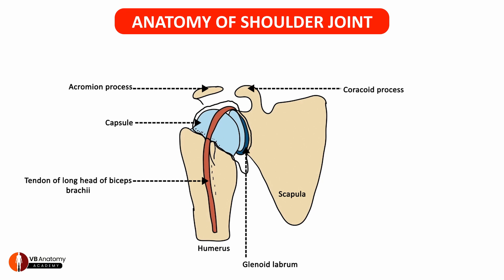Let's colour the capsule and you will understand its effect — see how the capsule includes the long head of biceps brachii inside the joint cavity.